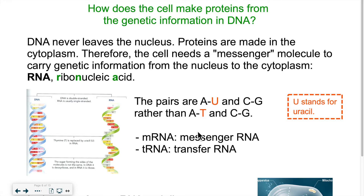DNA is stuck in the nucleus — it can never leave the nucleus. But proteins are made outside of the nucleus. So there has to be a process to extract the information from the DNA and bring it outside to the ribosomes where the proteins are going to be made. RNA will be the messenger, the link between the DNA and the ribosome.